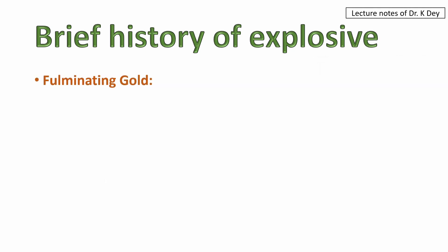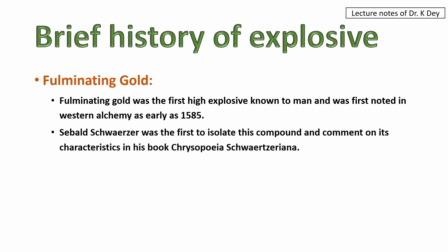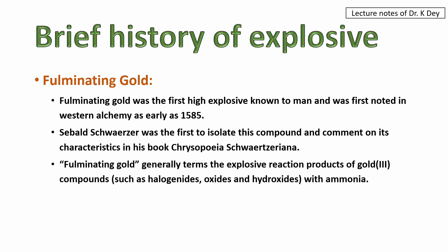Next is fulminating gold. Fulminating gold was the first high explosive known to man and was first noted in western alchemy as of the year 1585. Sebald Schwarzscher was the first to isolate this compound and comment on its characteristics. Fulminating gold generally refers to the explosive reaction products of gold(III) compounds such as halogenides, oxides, and hydroxides with ammonia.